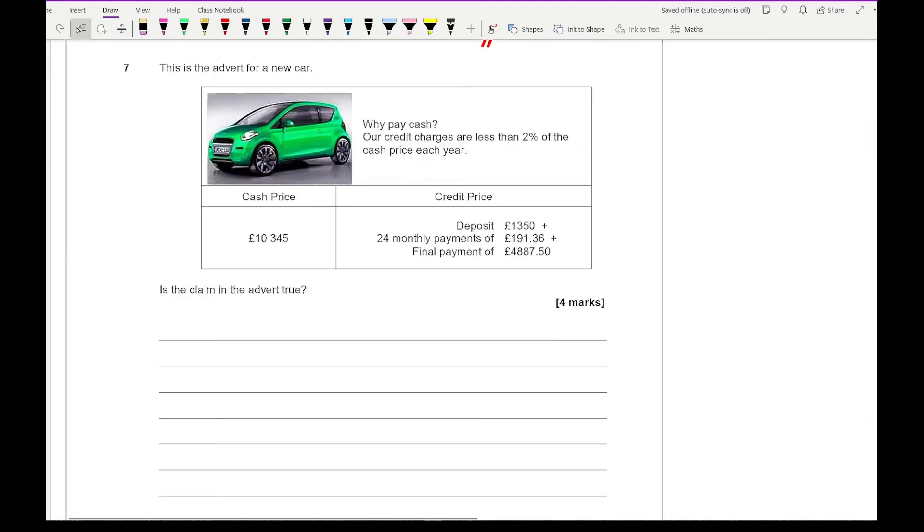For question seven, here is an advert for a new car. It says why pay cash? Our credit charges are less than 2% of the cash price each year. We've got cash price and credit price. Is the claim of the advert true? This question is worth four marks and we need to show a decent amount of working out. There's going to be more than one way of working this out.